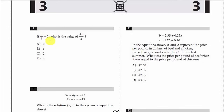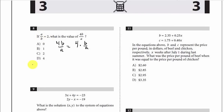A over B is equal to 2. What is the value of 4B over A? Notice that 4B over A can be written as 4 times B over A. We have A over B equals 2, and B over A is just the reciprocal, which is 1 half. So this is 4 times 1 half, which gives us 2. That's C.